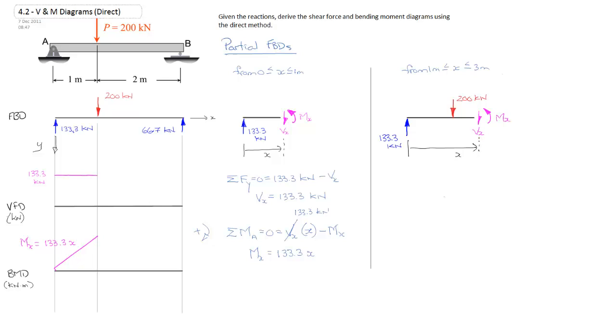And we'll carry on with exactly the same process that we used before. So we'll have the sum of the forces in the y direction equals zero, which in this case is equal to 133.3 kilonewtons minus 200 kilonewtons minus v at x. And that solved for v at x is equal to negative 66.7 kilonewtons.